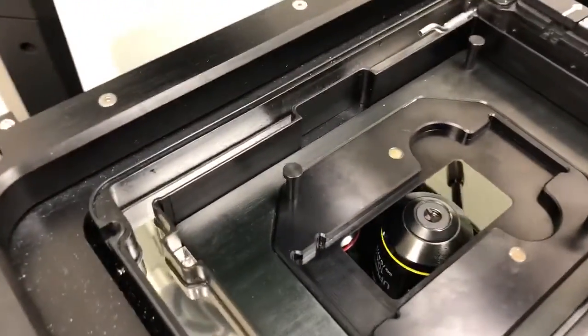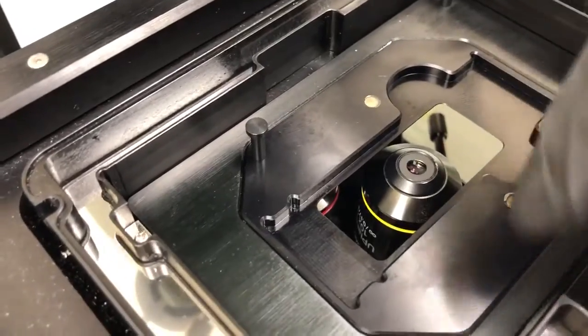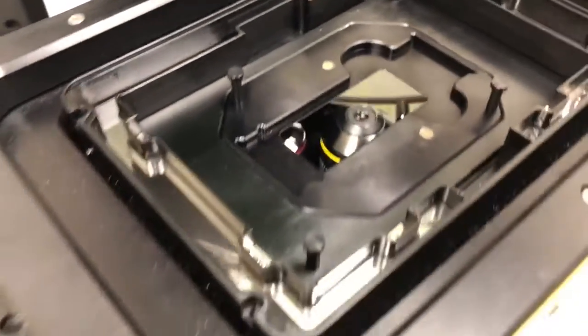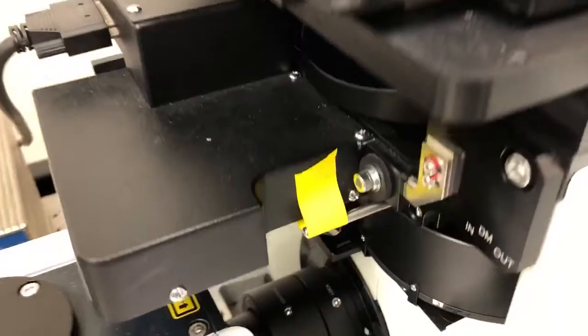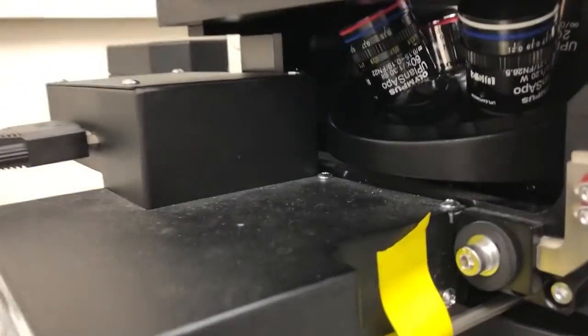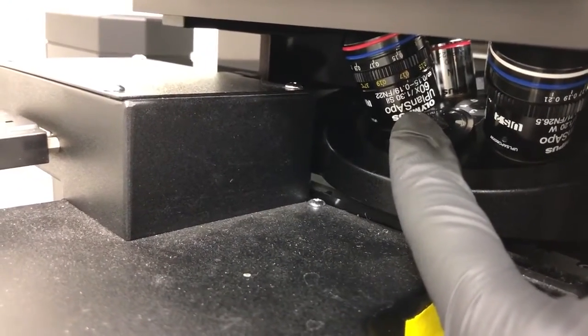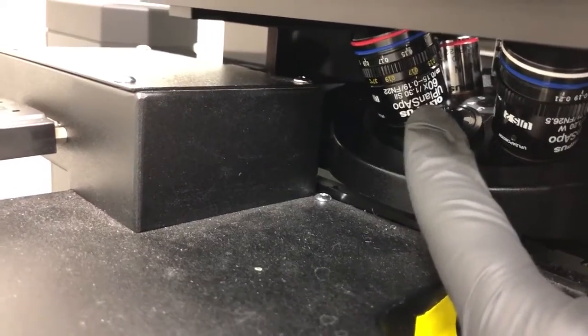By default, the microscope starts with the 10x in the sample position—that's the objective with the yellow ring, so that's what's in position now. Let's see if you can visualize the 60x silicon objective. The 60x silicon objective is this one right here, and what we need to look at are the markings on the side.